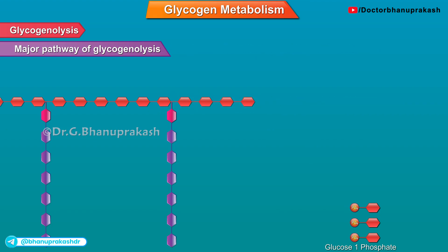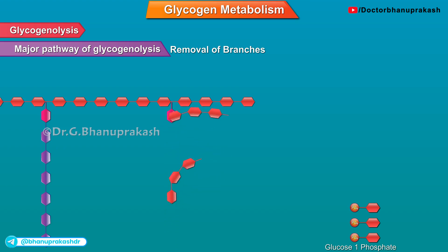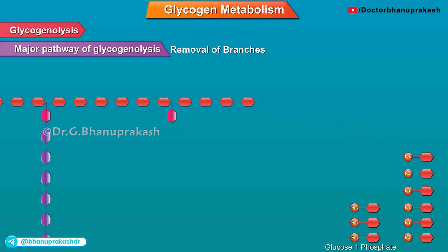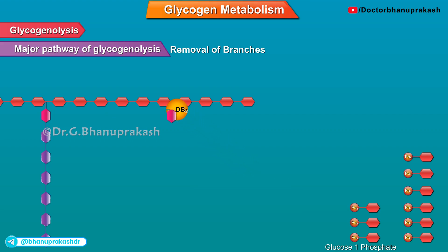The next step is the removal of branches. Alpha-1,4 and alpha-1,4-glucan transferase, which is the de-branching enzyme with transferase activity, transfers a trisaccharide residue to form a new alpha-1,4 linkage, leaving behind one glucose molecule at the branching point. Another enzyme called alpha-1,6-glucosidase, also known as amylo-1,6-glucosidase, is the de-branching enzyme with glucosidase activity, which hydrolyzes the branching point and releases free glucose but not glucose-1-phosphate.